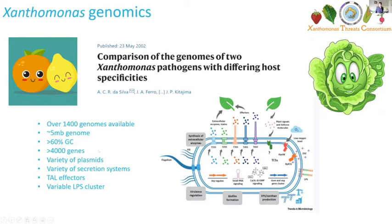A wide variety of pathogenicity factors are displayed across the genus, with all known secretion systems represented, variable lipopolysaccharide clusters, and Xanthan gum production clusters. Particularly interesting are the TAL effectors — transcription activator-like effectors — which are very interesting and we'll be looking into later on.